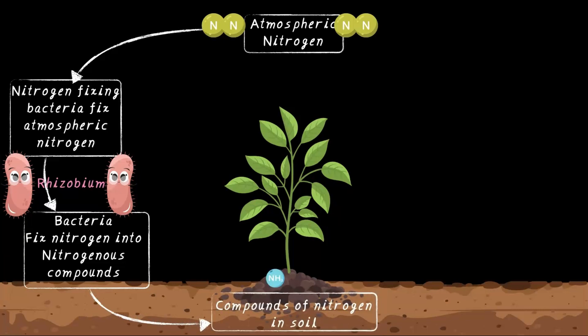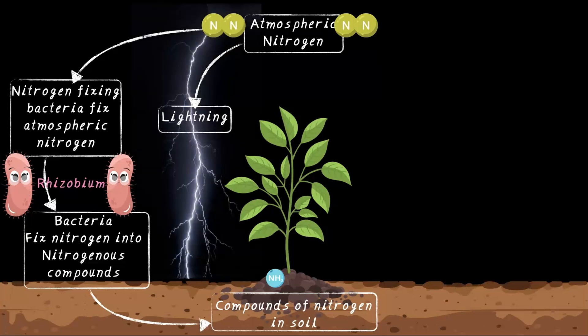But hold on—remember, bacteria aren't the only ones fixing nitrogen. There's another way, and it's pretty wild: lightning. When lightning strikes, it helps nitrogen combine with oxygen, forming nitrogenous compounds. Rainwater carries these compounds down to the soil, making nitrogen available for plants again.